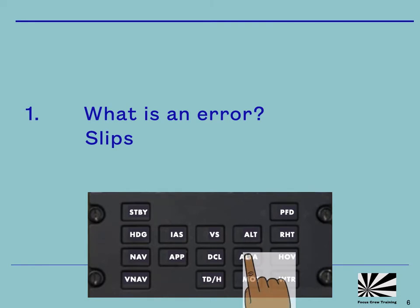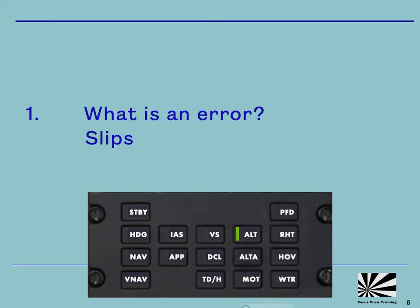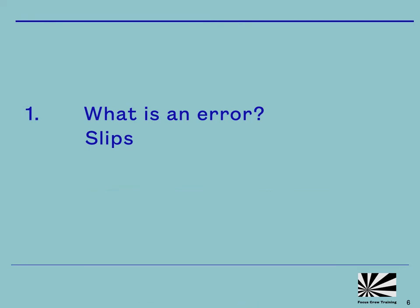Slips are when we know the correct action but through clumsiness, inattention or distraction we accidentally press the wrong button or move a switch to the incorrect position. Lapses are where we forget to do something, so in flight the obvious examples are forgetting to make a radio call, to set an altimeter or crucially to read a checklist.